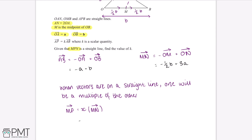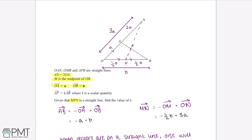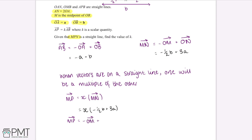The next thing we can do is work out what MP equals in terms of K. We've been told that AP equals K times AB. The route we take is M to O, O to A, and then A to P. Because OM equals half B, negative OM is negative half B. M to A equals A, and A to P equals K multiplied by AB, which we found to be negative A plus B. So we substitute this in: MP equals negative half B plus A plus K times (negative A plus B).